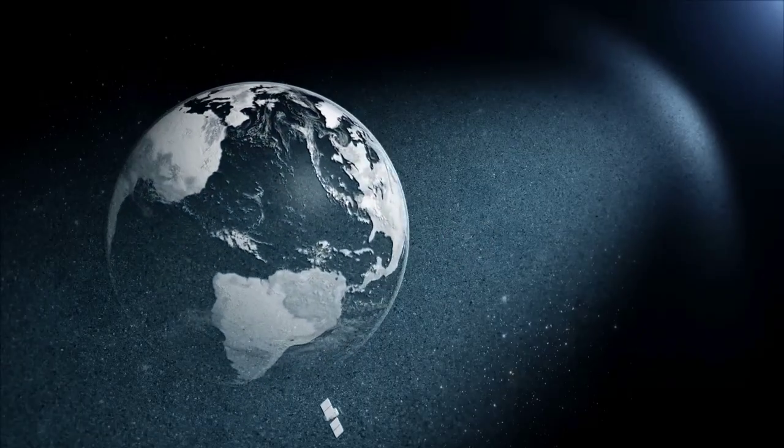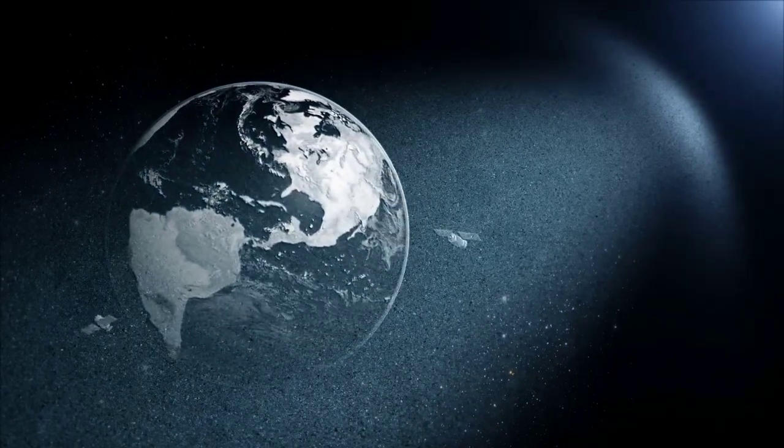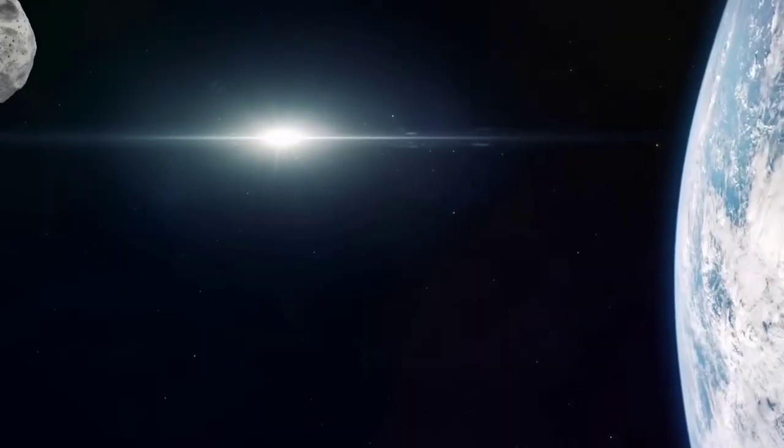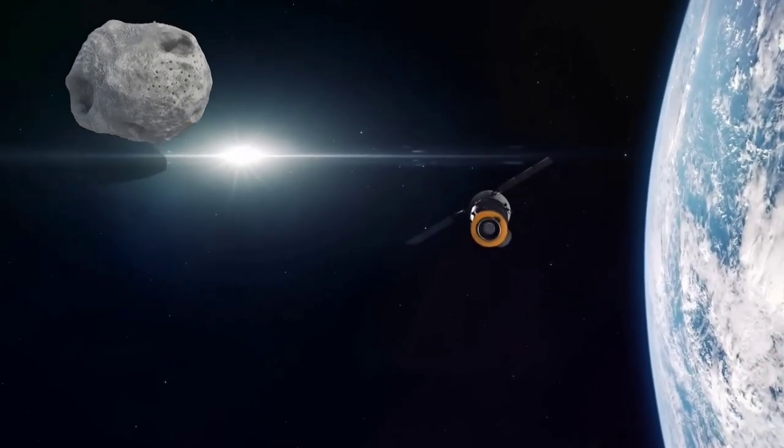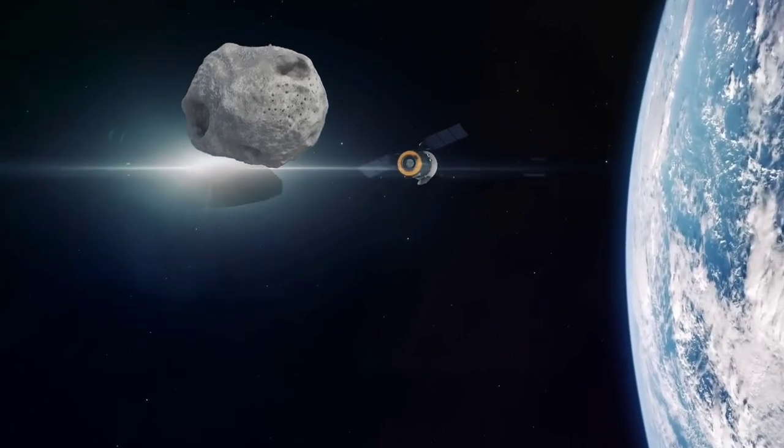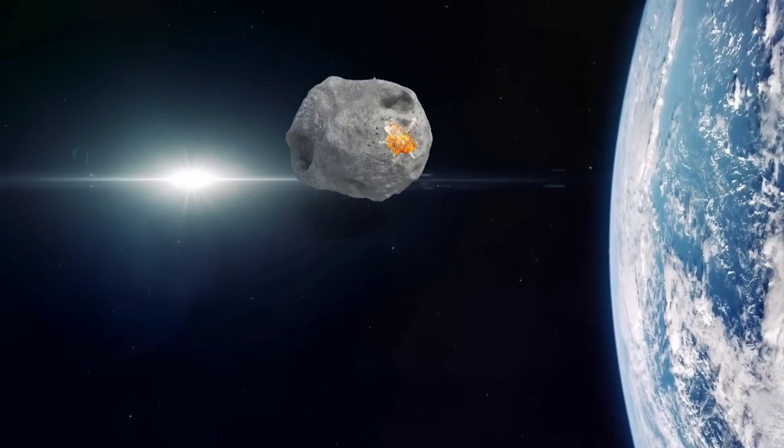According to the plan, NASA will deploy several space probes around the Earth. When they detect a large asteroid approaching our planet, they will direct one of the space probes to collide with the asteroid at a specific angle.